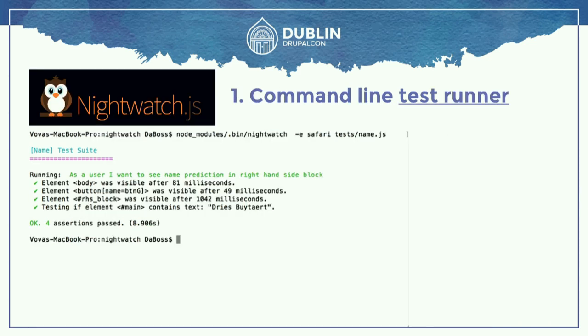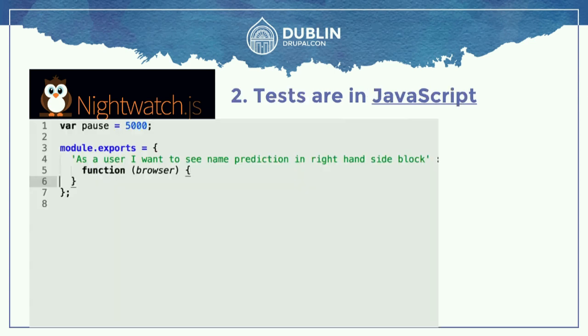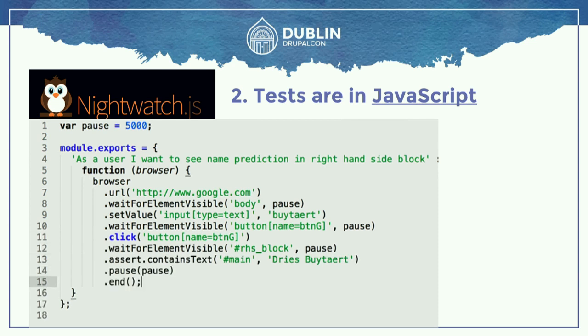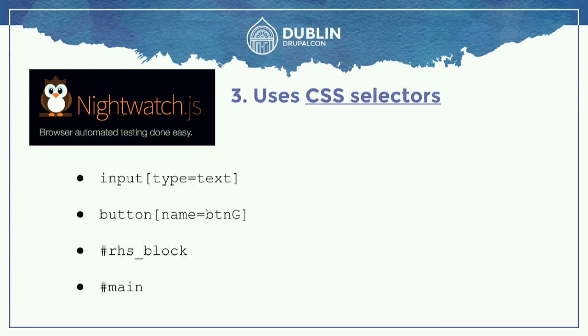So what is Nightwatch, and why are we actually using it? Nightwatch is a command line test runner — you run it from your command line and it runs tests. Tests are written in JavaScript. It uses CSS selectors, so if you work with jQuery it's pretty easy to understand. If not, it's not rocket science. It also uses XPath for lovers of very complicated things.